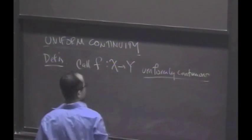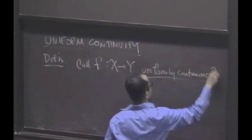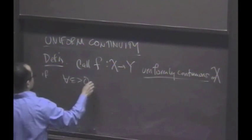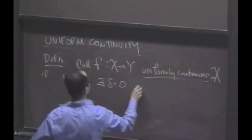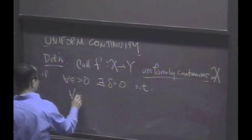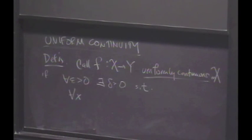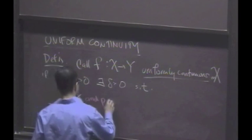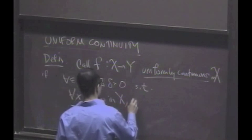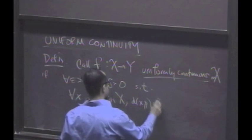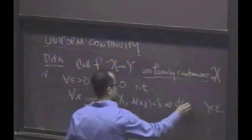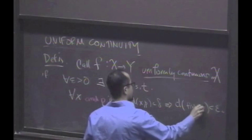If some condition holds. So we will say it's uniformly continuous on x if for all epsilon bigger than 0, there exists a delta bigger than 0 such that for all x, and the important thing is that not only is this true for all x, but it's also true for all p, any point p you want, in x. If the distance between x and p is less than delta, that implies the distance between f of x and f of p is less than epsilon.